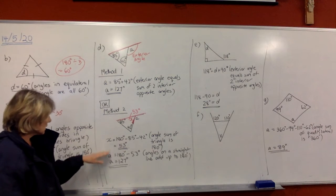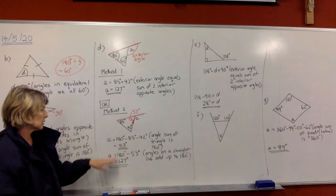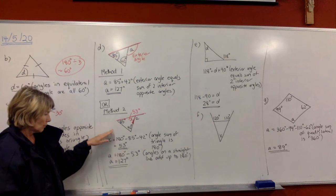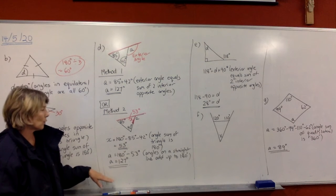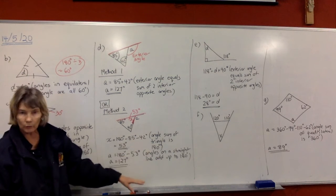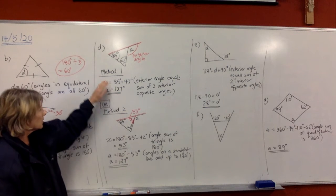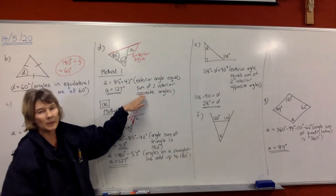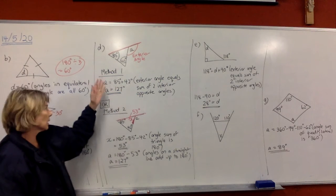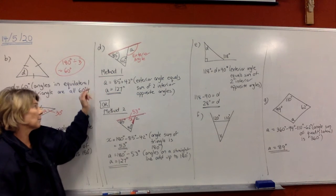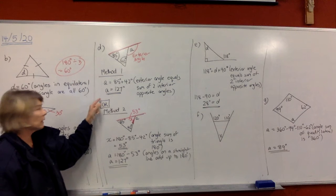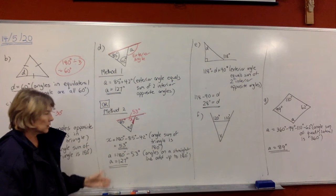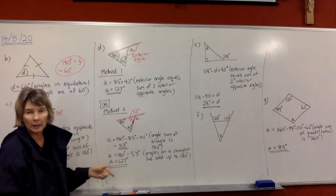In this case it's longer — four lines of working and two reasons — versus two lines of working and one reason using the exterior angle rule. But a lot of people in the exam won't remember that rule, so you can still do this method and get it right.